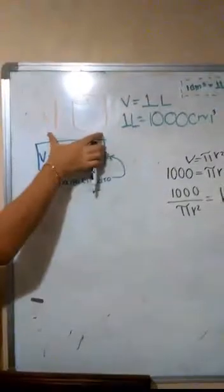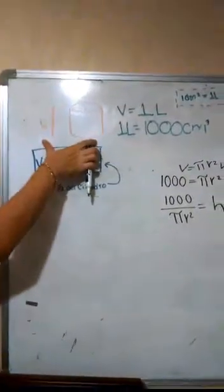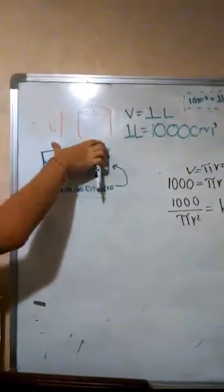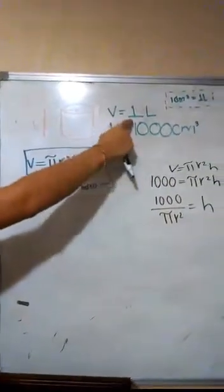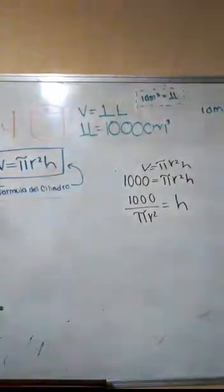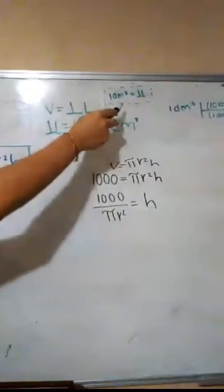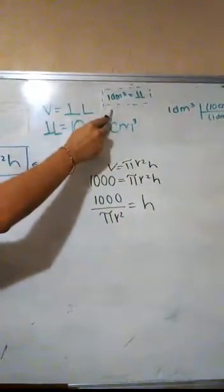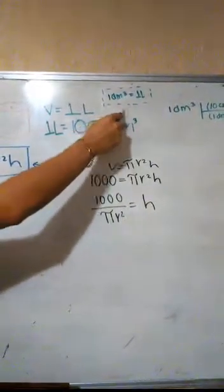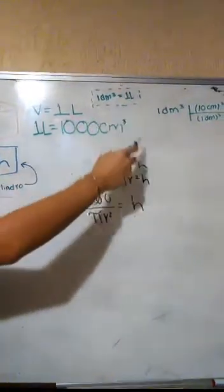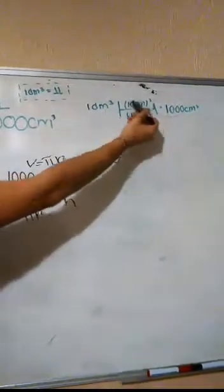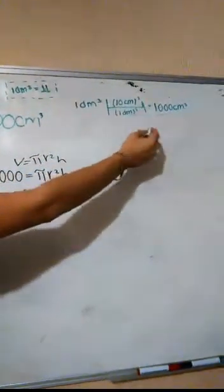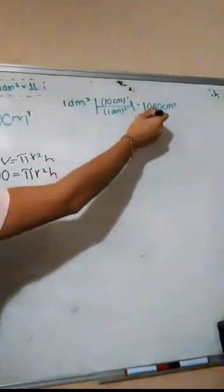Para terminar el ejercicio haremos un dibujo como este. El ejercicio nos indica que el volumen es igual a 1 litro. La conversión que tenemos es que un decímetro cúbico es igual a 1 litro. El decímetro cúbico lo pasamos a centímetros cúbicos y nos da como resultado 1000 centímetros cúbicos.